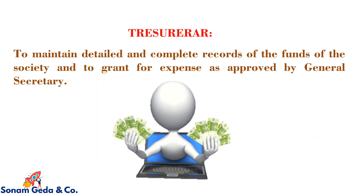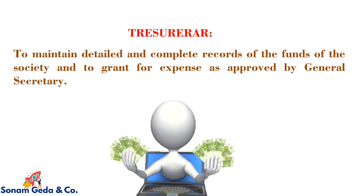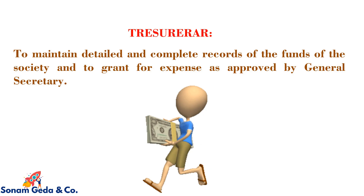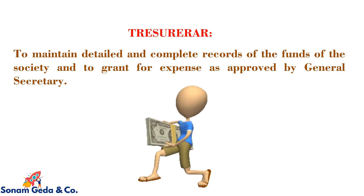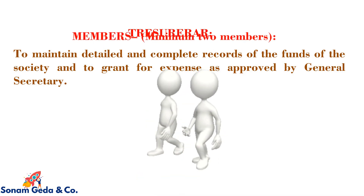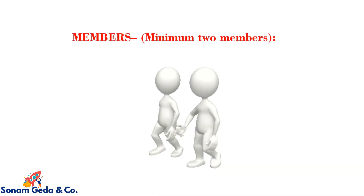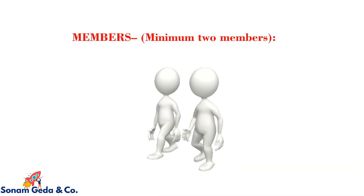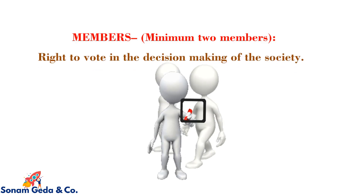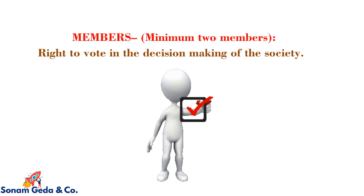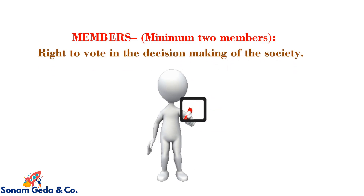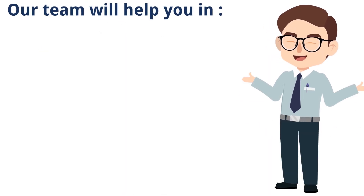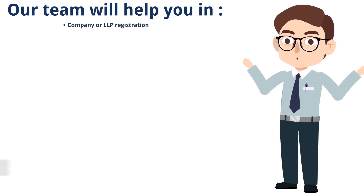Treasurer: to maintain detailed and complete records of the funds of the society and to grant expenses as approved by the general secretary. Members: a minimum of two members have the right to vote in the decision-making of the society.